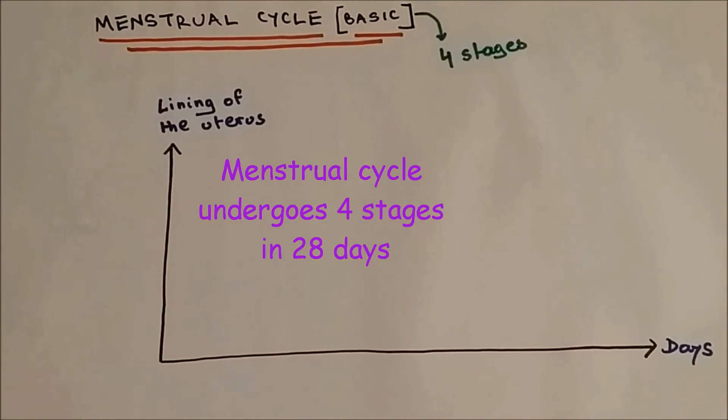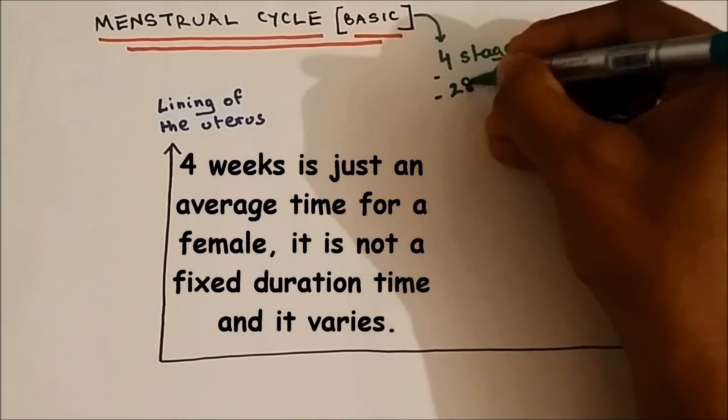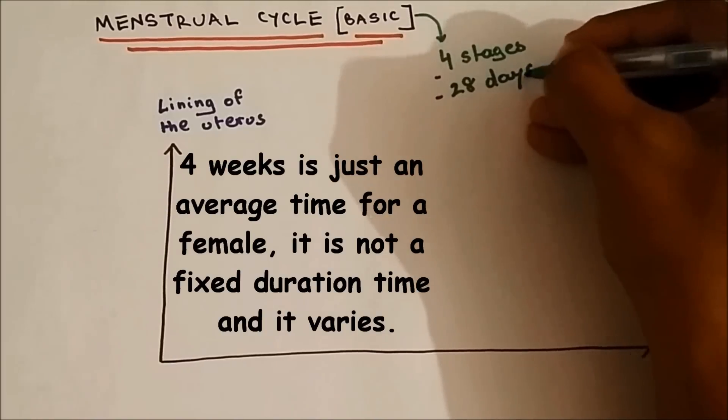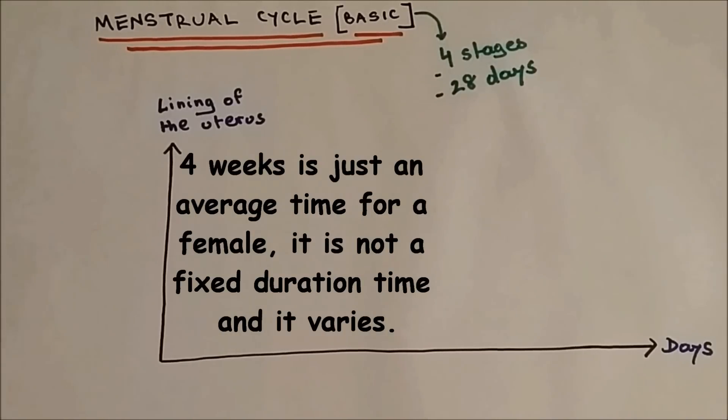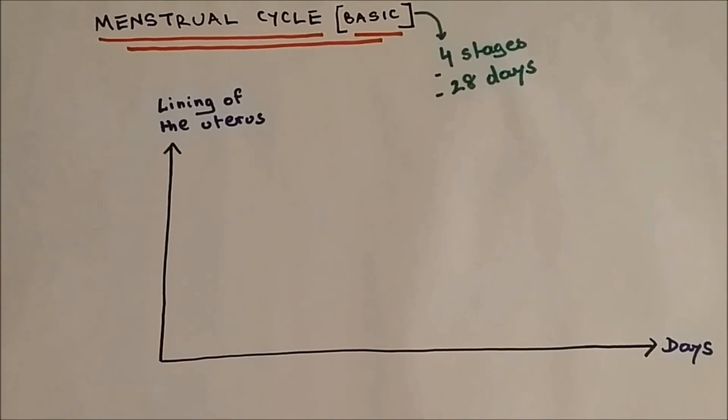Menstrual cycle can be divided into four stages and it takes 28 days for one complete cycle. But 28 days is just an average value. It could be different for different females, it could be slightly more or slightly less, but the average day is 28 days.